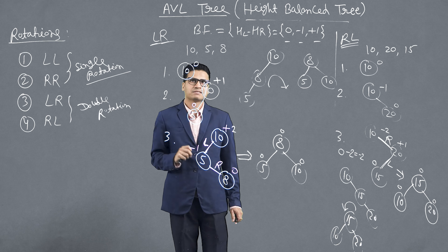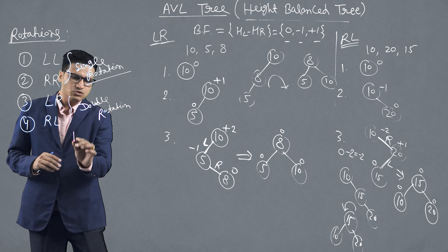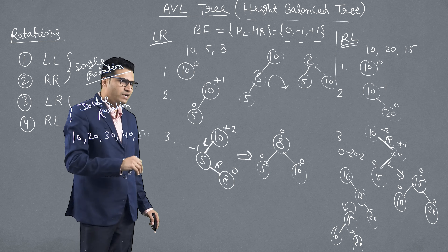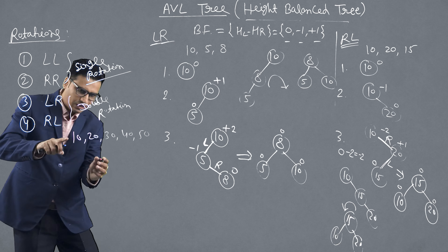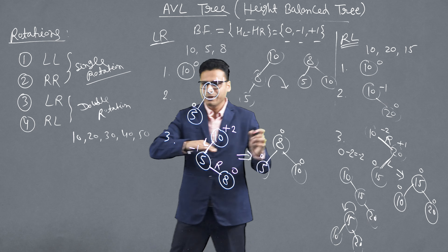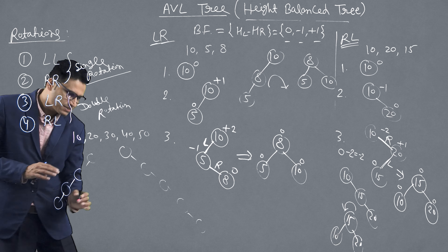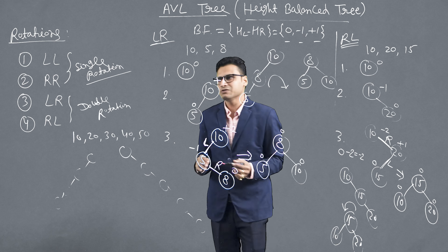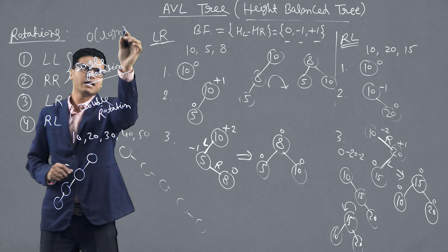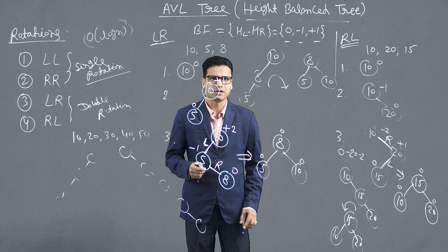Now regarding the time complexity of the AVL tree: because the AVL tree is always height-balanced, when we insert elements the tree remains balanced. This means we never move only in one direction (left or right), which keeps the height logarithmic. In the next video we will solve questions based on AVL trees. Thank you so much.